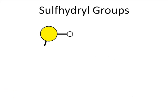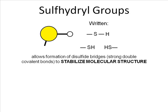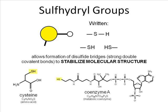Sulfhydryl groups, as the name implies, have a sulfur covalently bound to a hydrogen. Sulfhydryl groups are especially important in protein structure — they form strong bonds when two sulfhydryl groups come together, forming what we call disulfide bridges, which stabilize complex molecular structure. Here we see cysteine, the amino acid with the sulfhydryl group. And here's coenzyme A, which has a sulfhydryl group on the end. Sulfhydryl groups stabilize molecular structure by forming disulfide bridges when two come together.